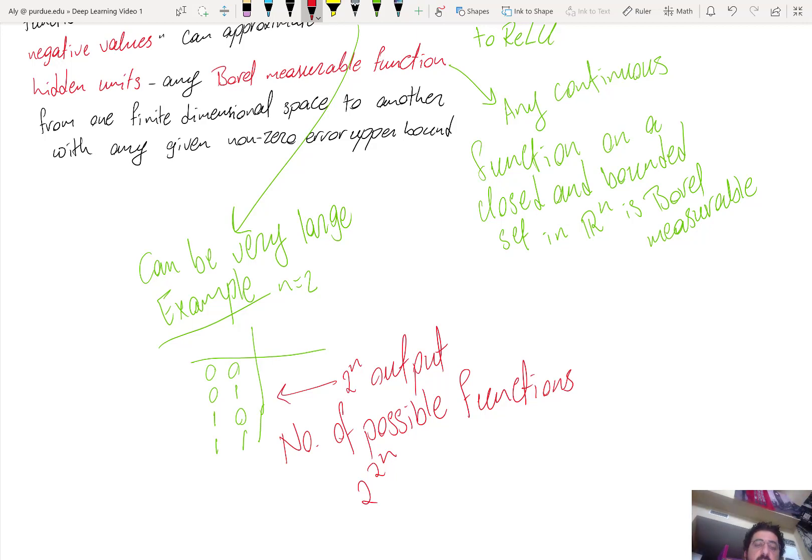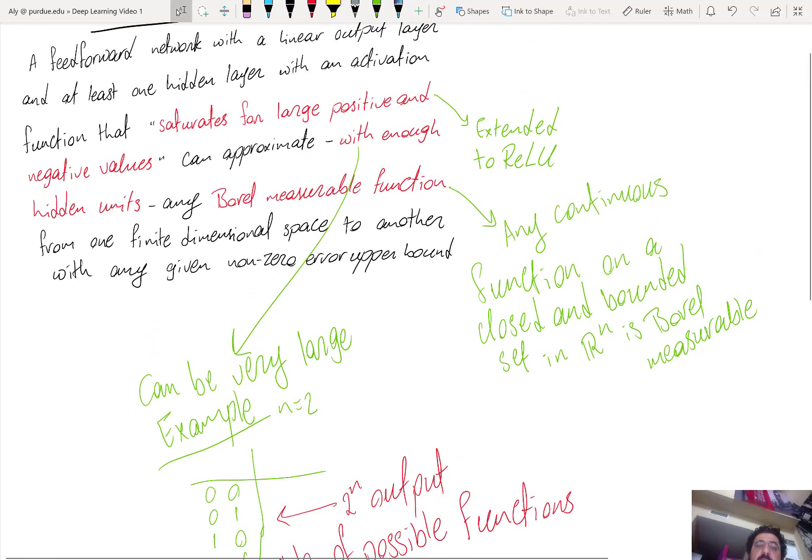So maybe you have a function that's all zeros, another function that's 0,0,0,1, another function that's 0,0,1,0, and so on. So the number of hidden units can be up to two to the n, double exponential. So that's an important thing.